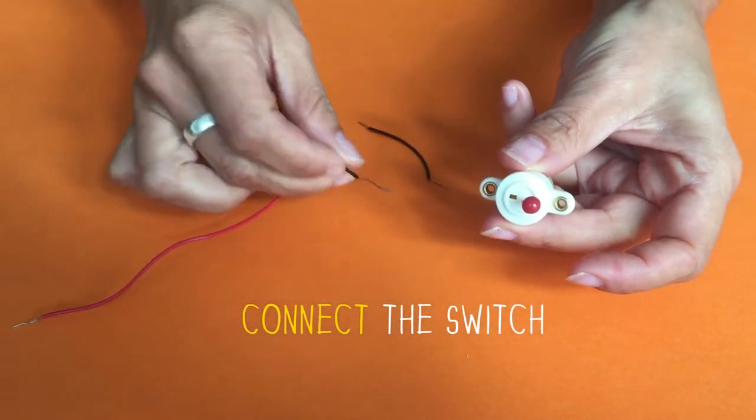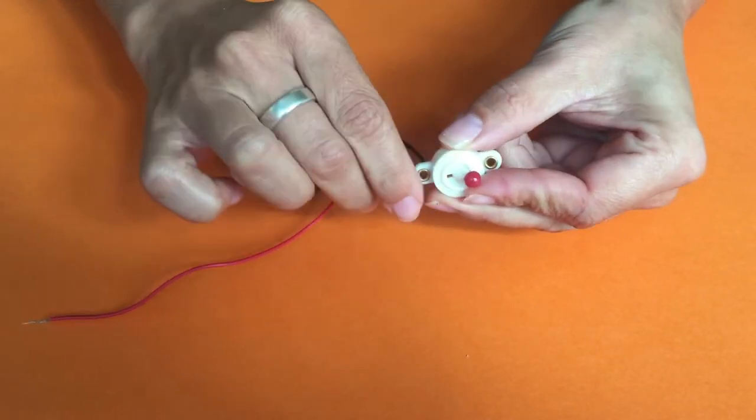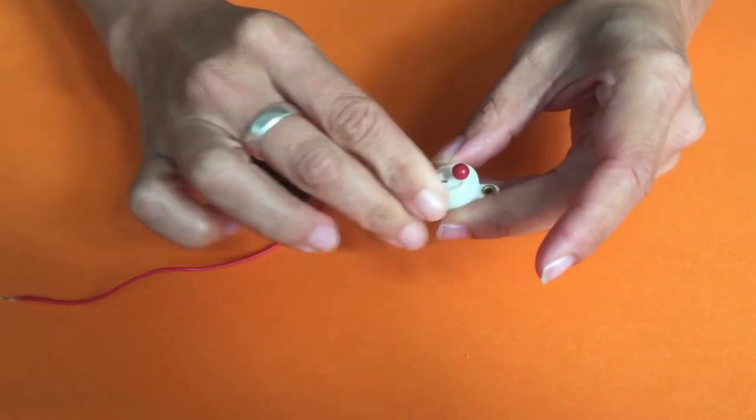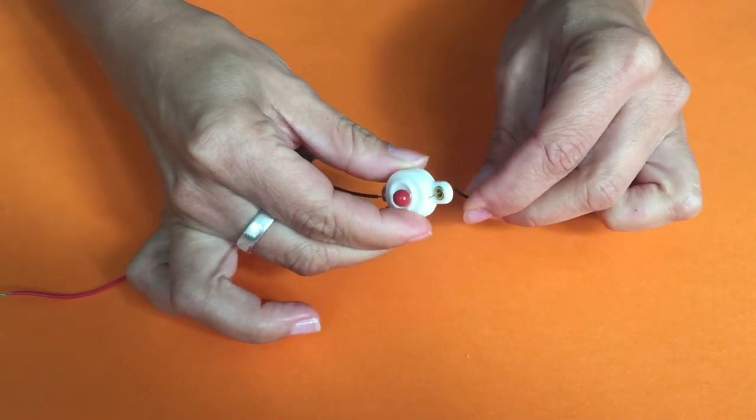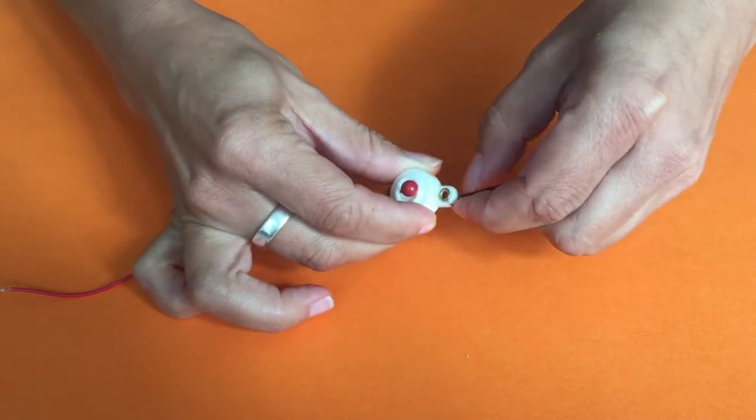Take one end of the wire, pull the metal part through the loop of the switch and fold and twist it tightly around it. Now connect the other end of the wire the same way.